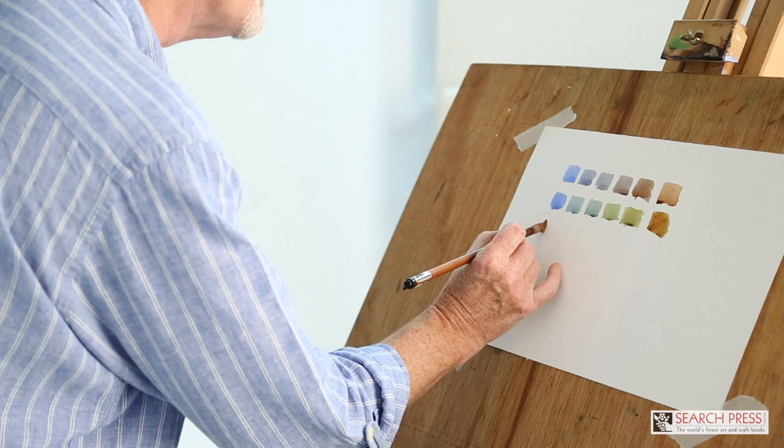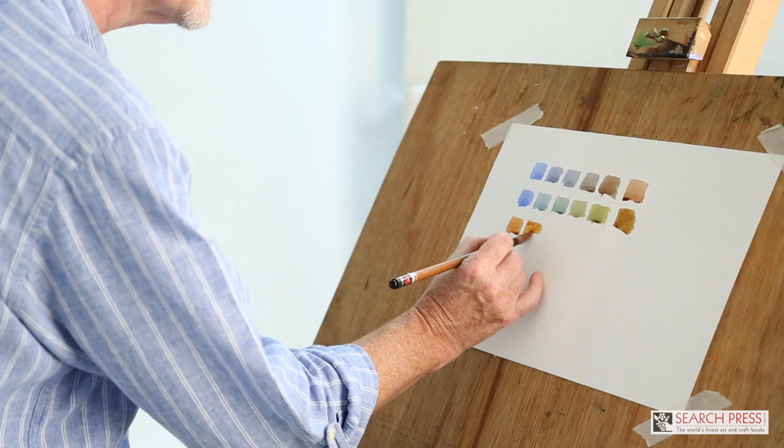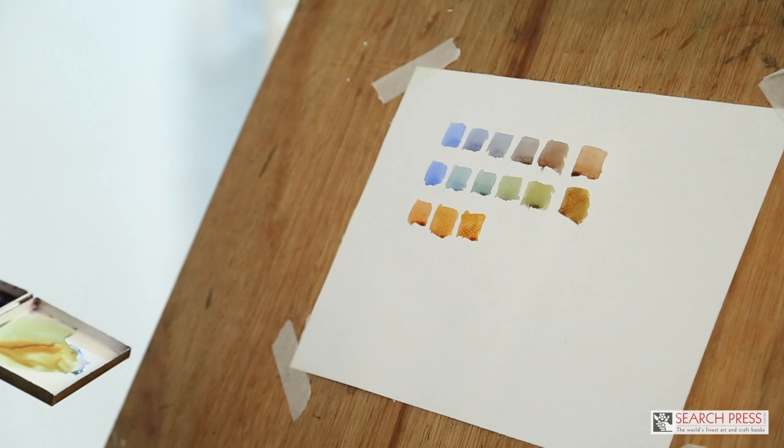Another more subtle mix is if we start with Burnt Sienna and add the Quinacridone Gold to it a little at a time. What happens is that the Burnt Sienna changes to a soft gold, which is ideal to get that little bit of warmth into our winter scenes.